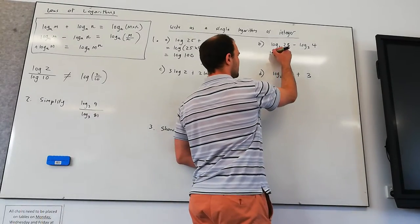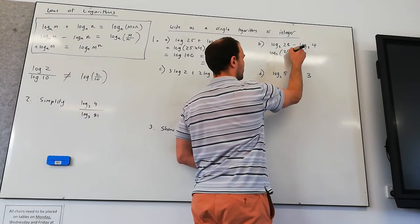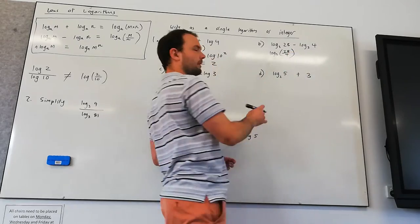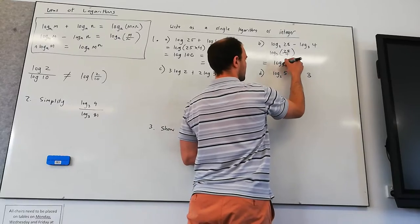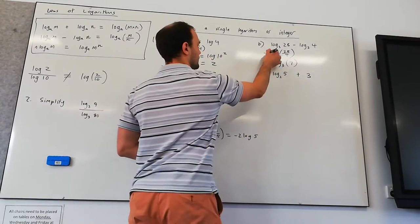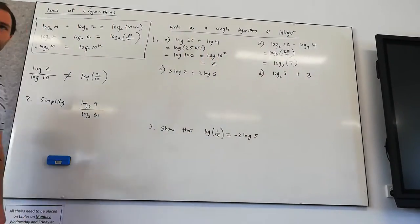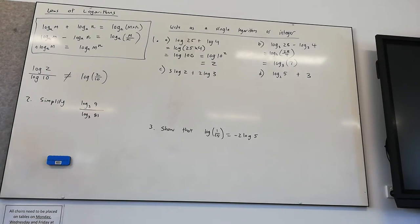Log in base 3 of 28. So we're going to have 28 divided by 4. They're both at the same base, so we can perform that operation. 28 divided by 4 is log in base 3 of 7, and we can't simplify it any further. 7 is not a power of 3.